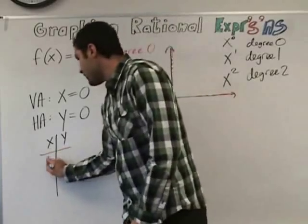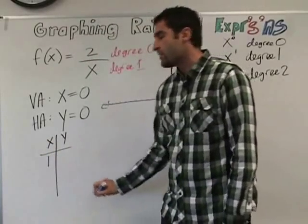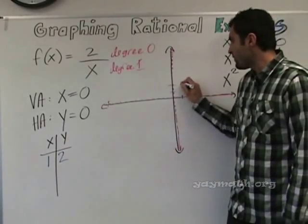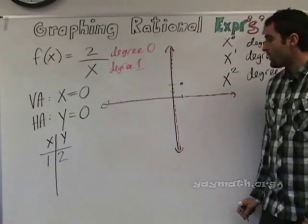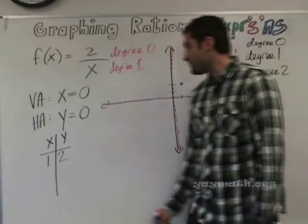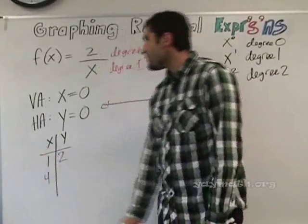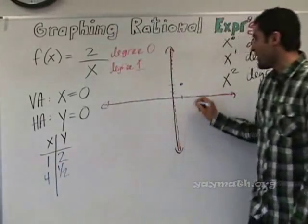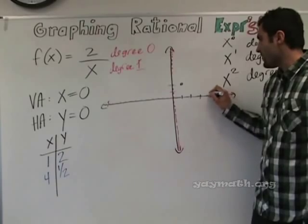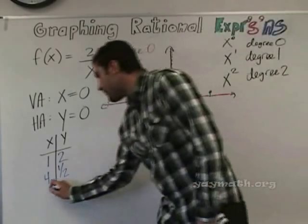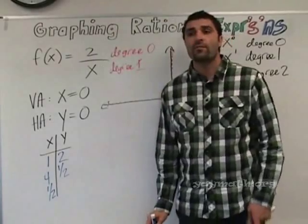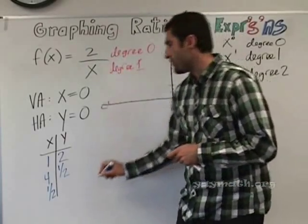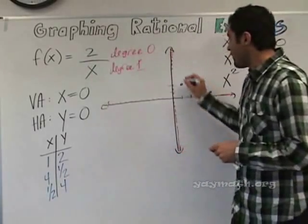One is good. When x is 1, y is 2. Graphing it — one, two. How about when x is 4? Y is one half — four, one half. And when x is one half? Y is 4. Good job — two divided by one half is four. So one half, four would be here.